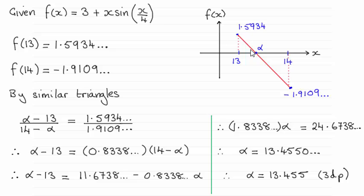It's not drawn to scale, but essentially you could see that if you were to draw a straight line between those two values, then that root alpha is going to be closer to 13 than it is to 14.